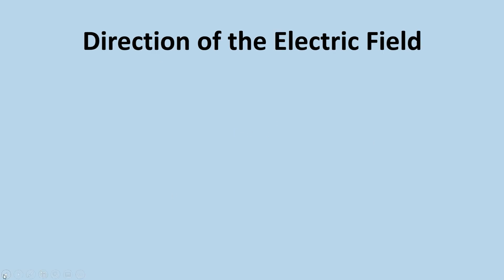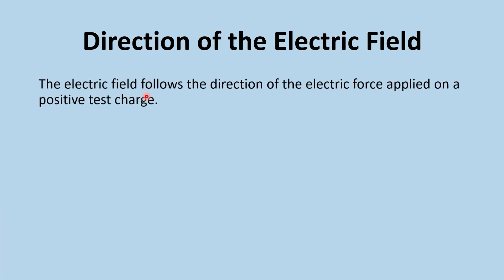To know the direction of the electric field, we follow a rule: the electric field follows the direction of the electric force applied on a positive test charge. So if we have a charged object and want to know the direction of the electric field, we place a small positive test charge next to it and observe the direction of the electric force. The field takes the direction of that force.